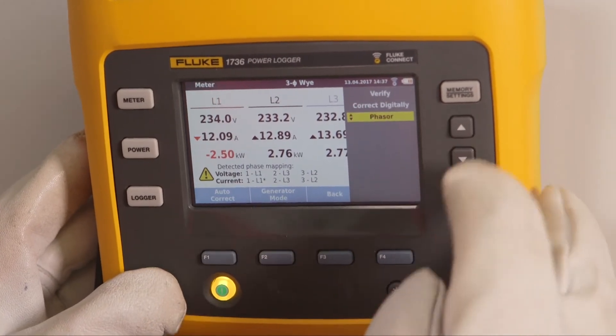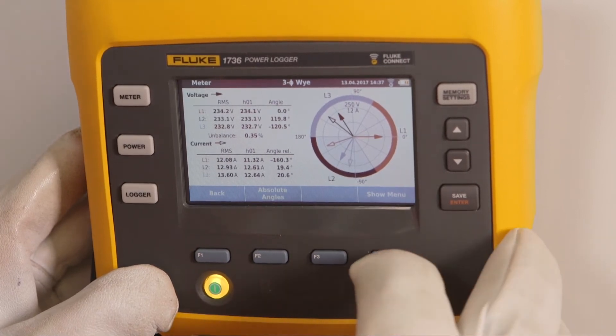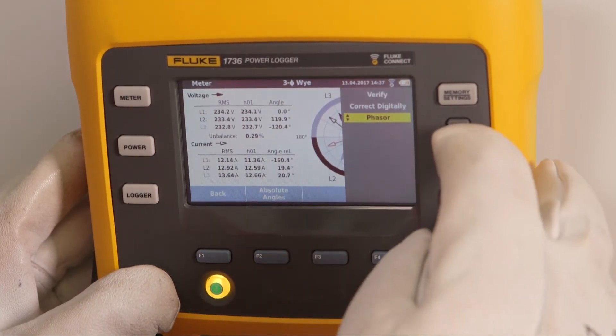He double checks the connections. The phasor diagram shows that one current is in counter phase. This needs to be corrected.